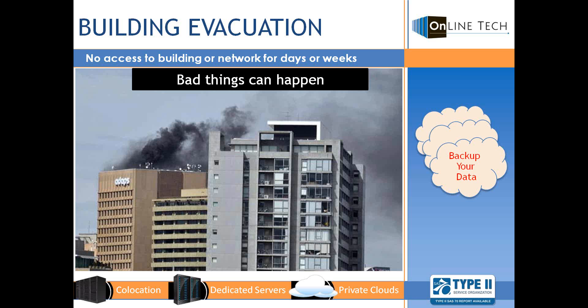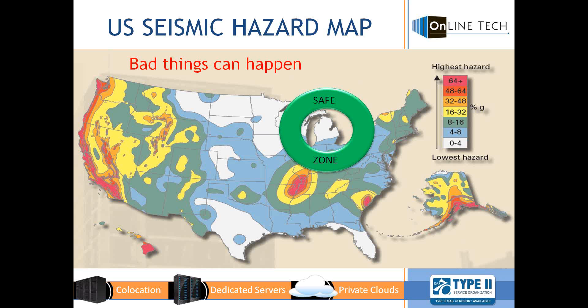Your data could be in there — destroyed or intact, destroyed by fire or water. You need a solid backup plan. And even worse than a fire, an earthquake or hurricane could wipe out your data, servers, or office. So you have to make sure that your data is in a safe zone, like Michigan, where Online Tech's data centers are located.